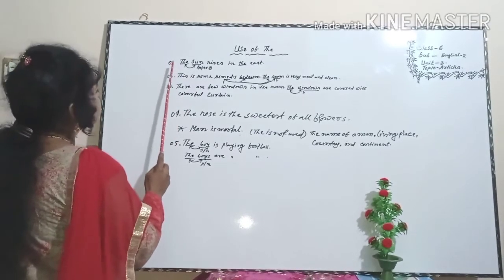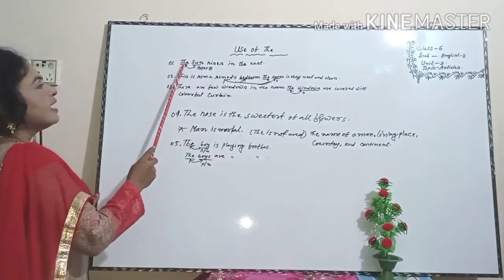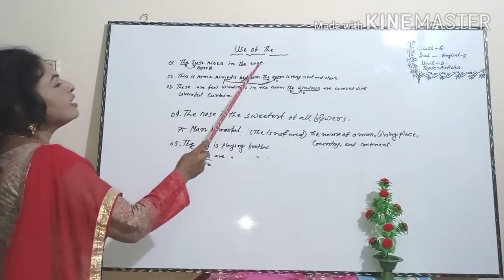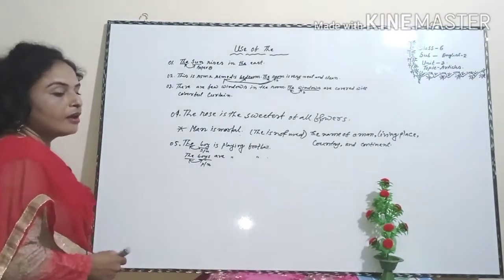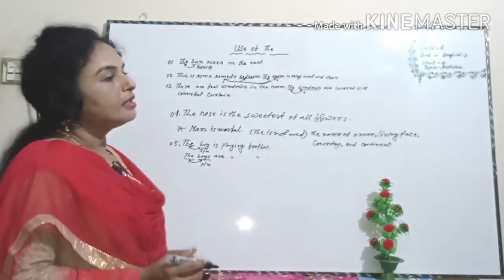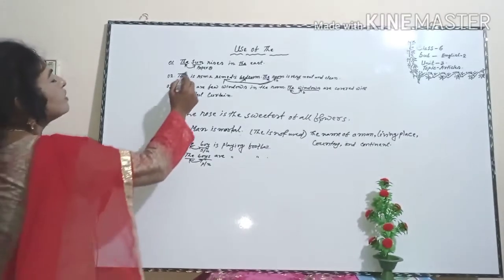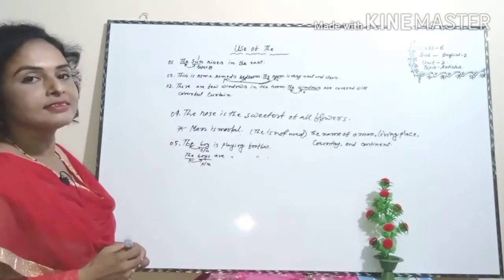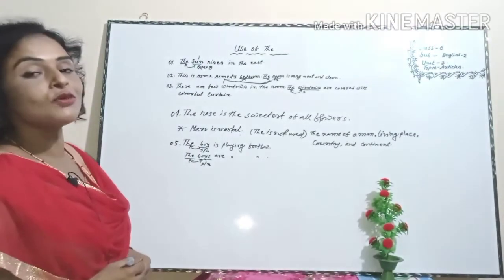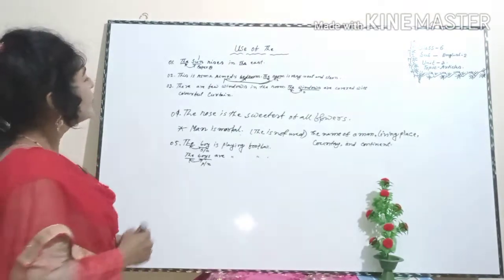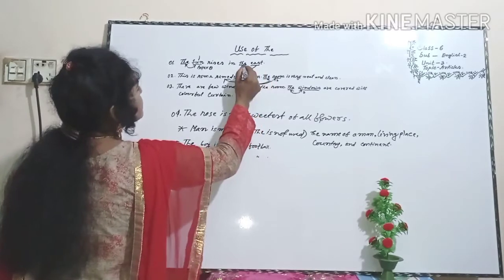Dear learners, here sentence number one: 'The sun rises in the east.' You must know the sun is only one in the earth — only one in the earth. It has no alternative. Before 'sun', we use 'the'. Also before 'east', we use 'the'.